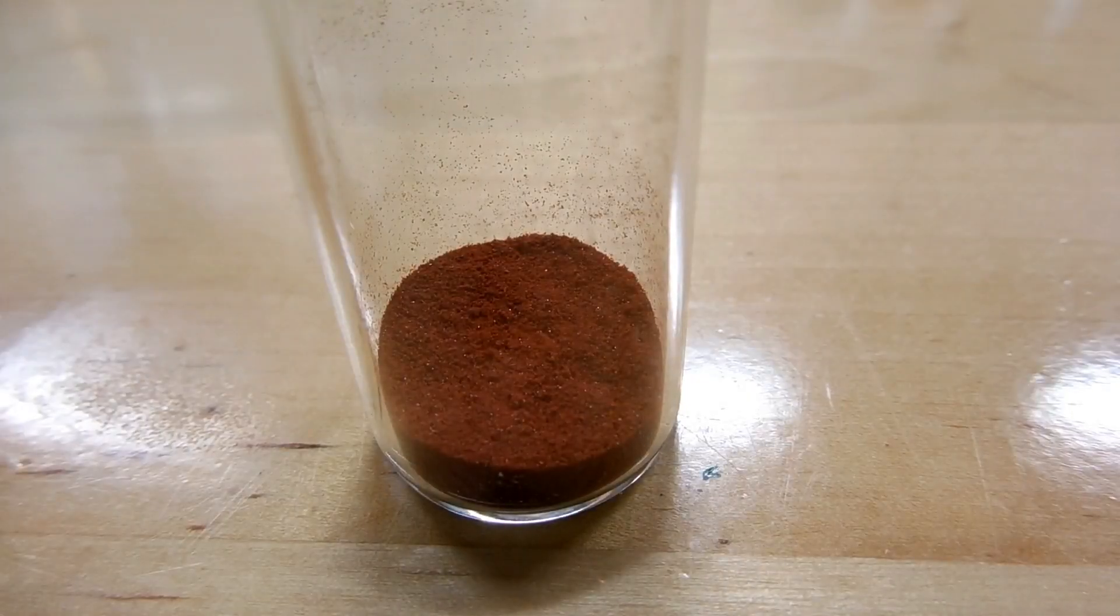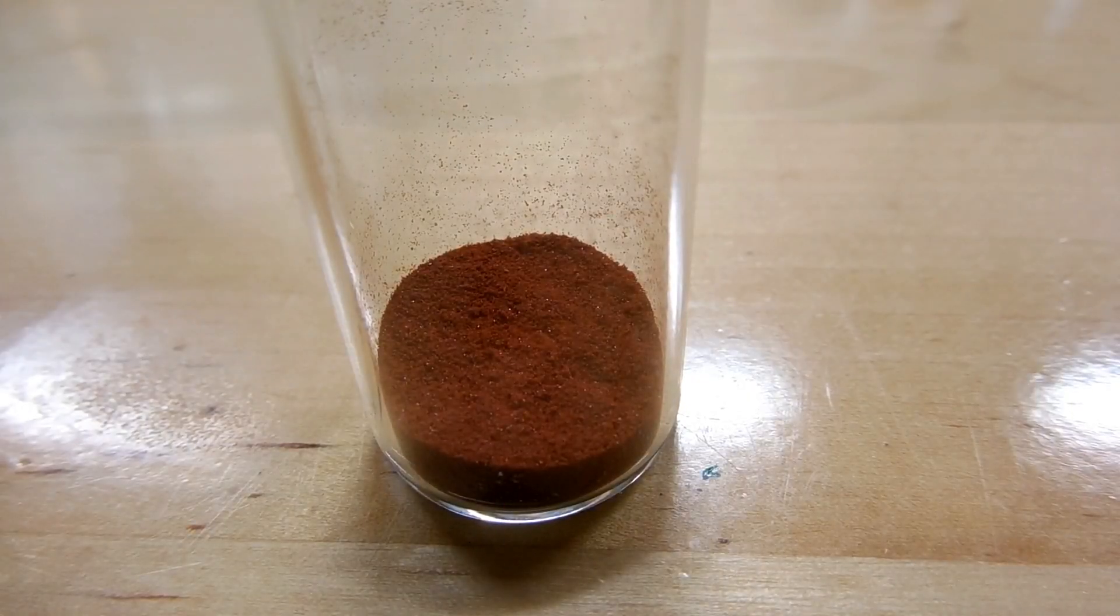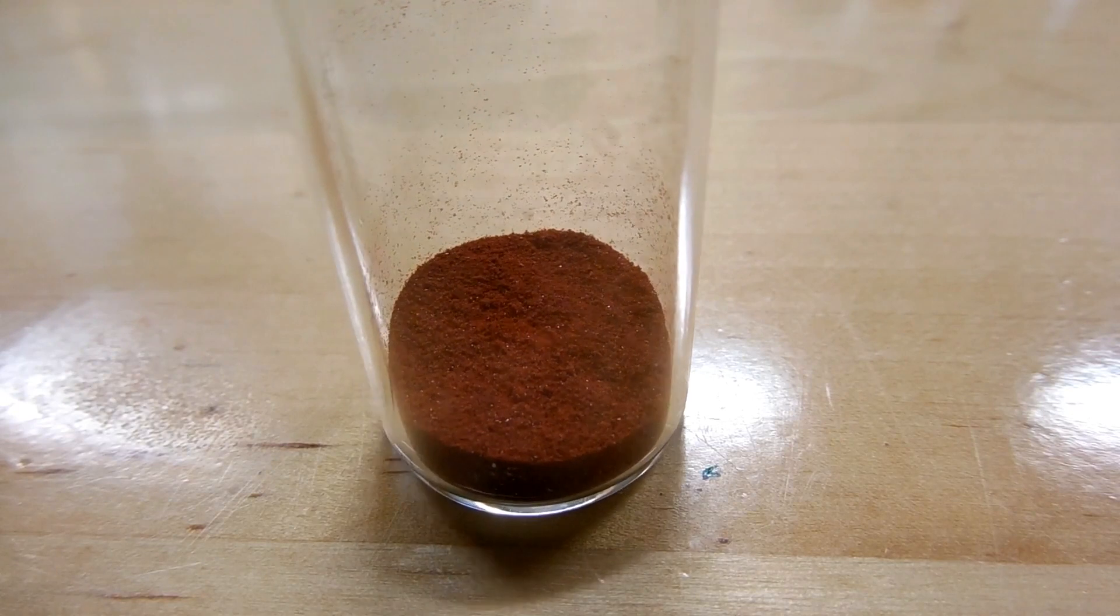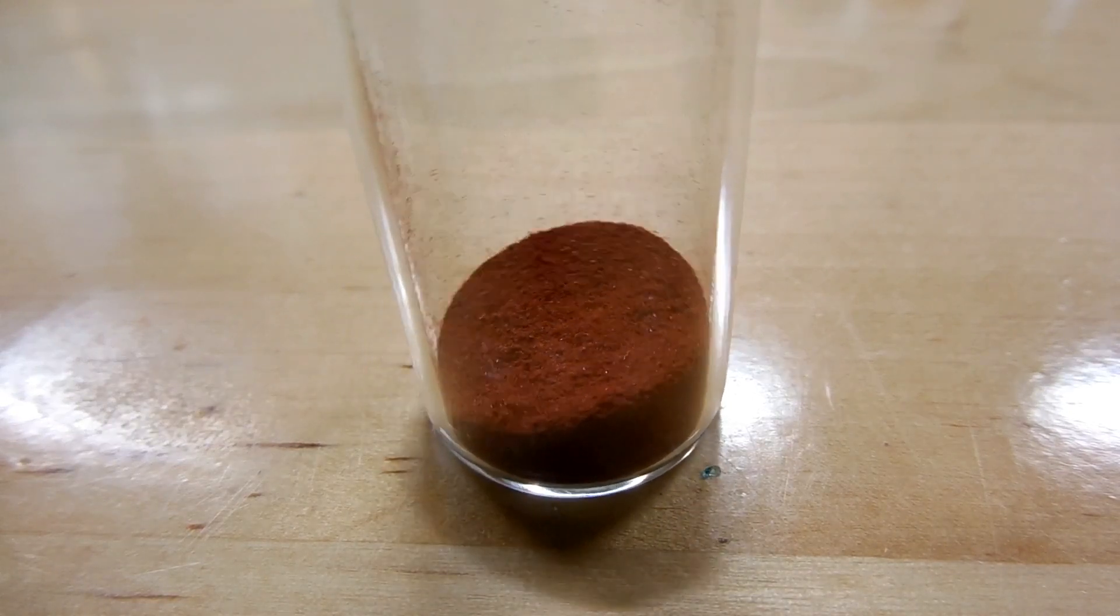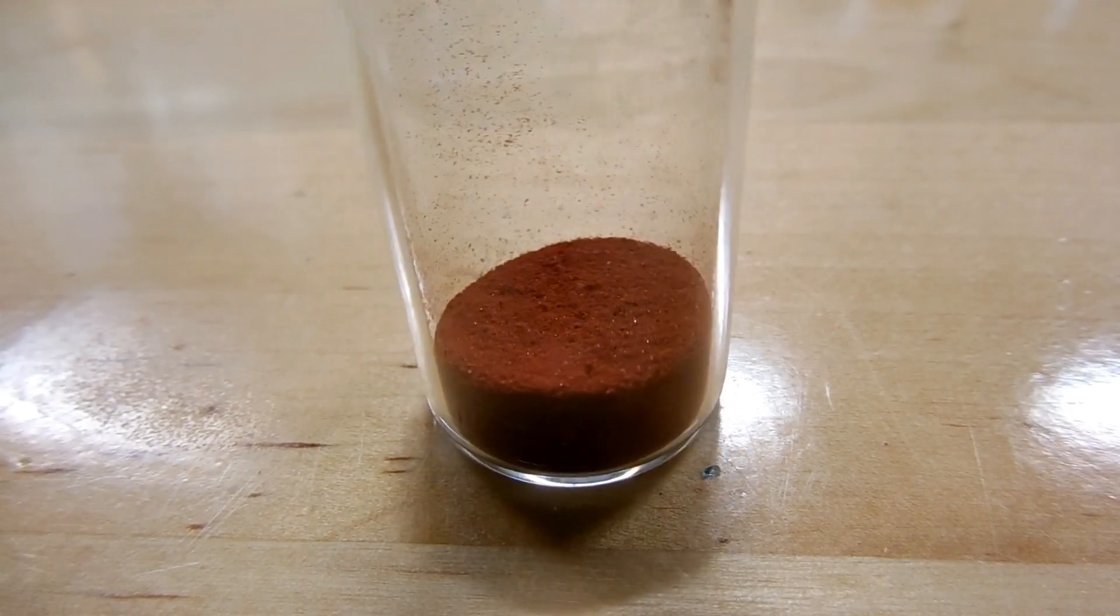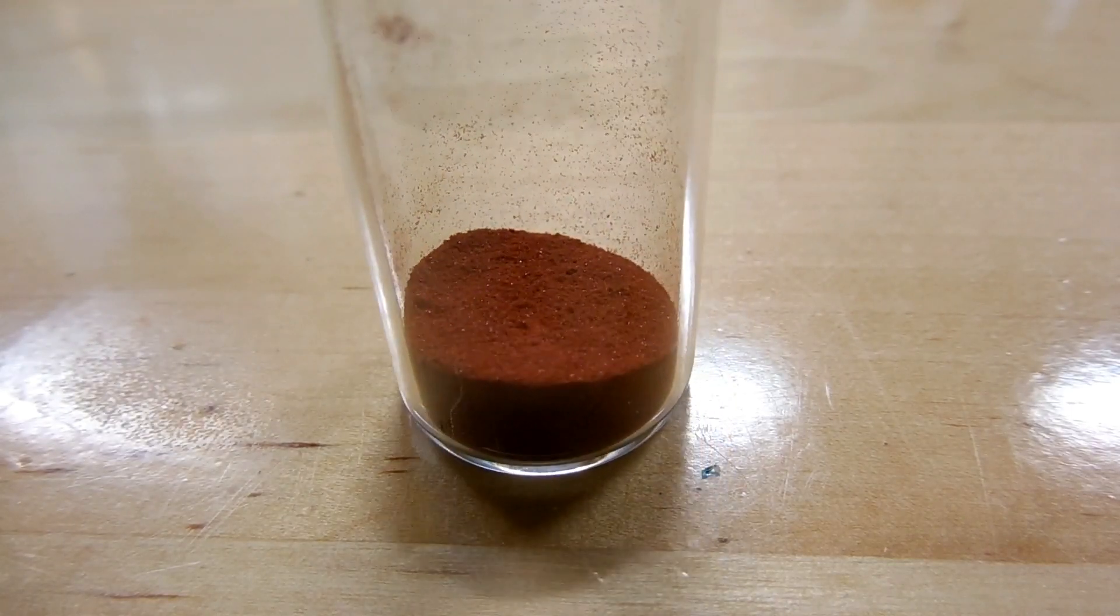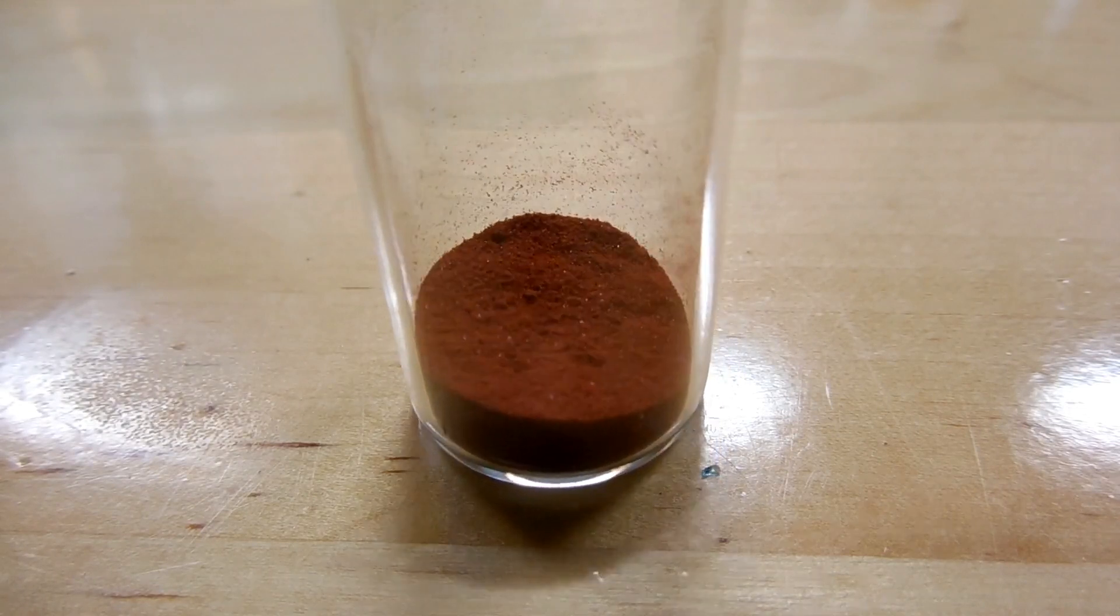So there you have it, preparation of Chevreul's salt, a red copper compound that is a mixed valence sulfite starting with a blue solution and a colorless solution creating a green solution and ending with a brick red precipitate. Really beautiful copper chemistry.